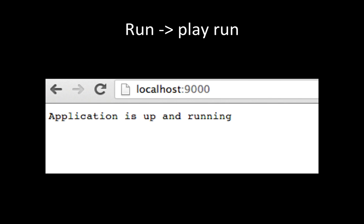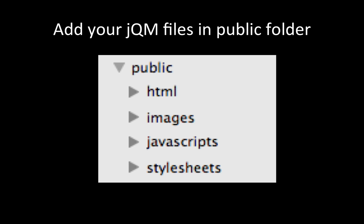So we've created a new app, made sure it's running and compiling, and tested it locally. What we do next is create a public folder in the root and place all of our HTML — the landing page for your jQuery Mobile app — in HTML. All your jQuery Mobile JS and CSS files go under JavaScript, and all the images go under images.